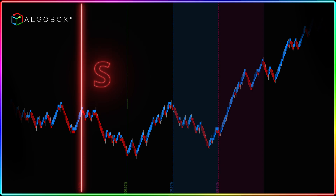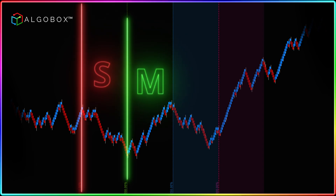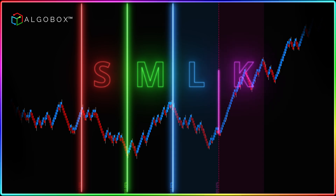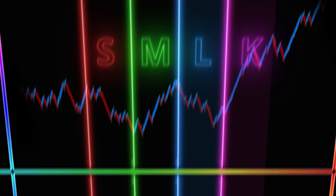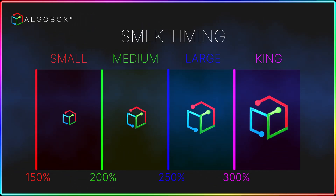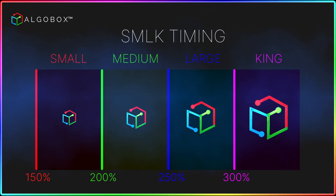Welcome back, traders. Today we're breaking down the AlgoBox SMLK Timing Lines, your ultimate guide for precise trade timing. Whether you're targeting small moves or aiming for big runners, SMLK Timing Lines can refine your entries and boost your confidence. SMLK Timing Lines leverage price structure, Fibonacci extensions, and Darvus boxes to provide a clear visual framework for identifying potential trade setups.